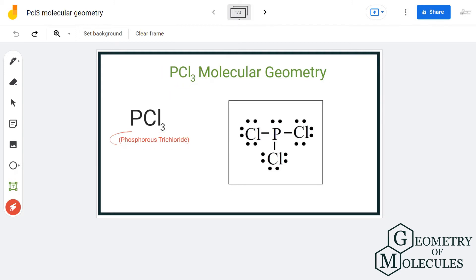To understand its molecular geometry, we are first going to look at its Lewis structure. This is the Lewis structure of PCl3 where Phosphorus is forming single bonds with 3 chlorine atoms and there is one lone pair on Phosphorus.